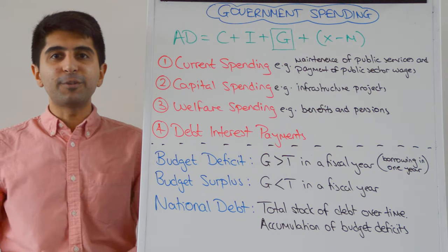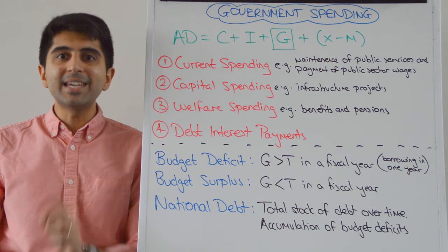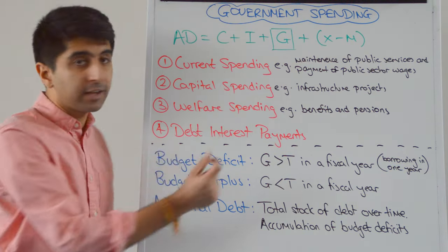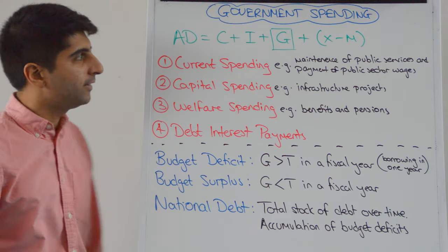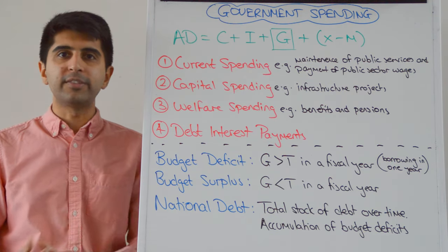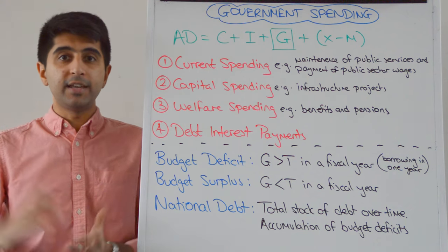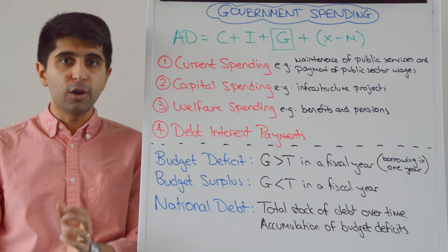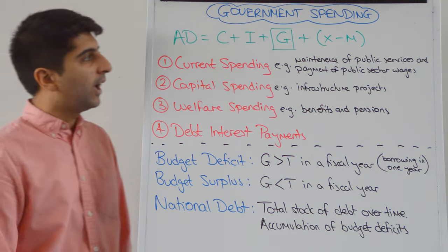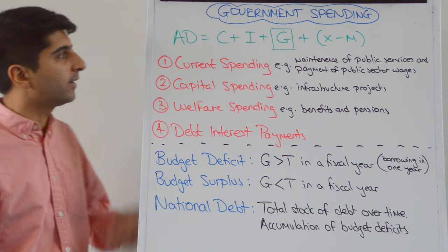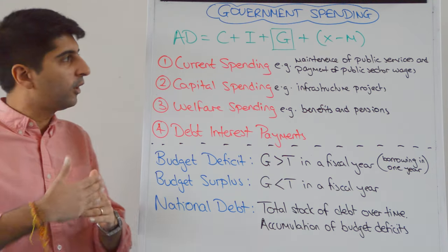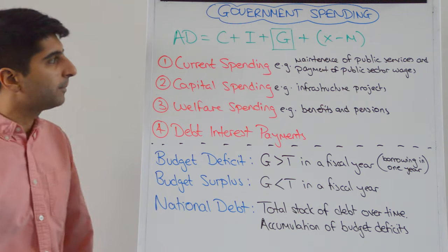Hi everybody! Government spending is a key component of the aggregate demand equation which is C plus I plus G plus X minus M. Governments will often spend money to influence the level of economic activity, to influence both short run and long run growth. It's a very important part of how the economy works, especially in influencing AD which is short run growth — AD shifting right or left.